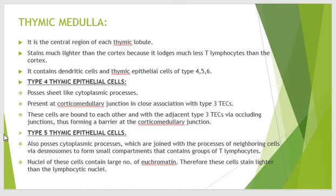Type 5 thymic epithelial cells also possess cytoplasmic processes which are joined with the processes of neighboring cells via desmosomes to form small compartments that contain groups of T lymphocytes. The nuclei of these thymic epithelial cells contain a large number of euchromatin; therefore, these cells stain lighter than the lymphocyte nuclei.